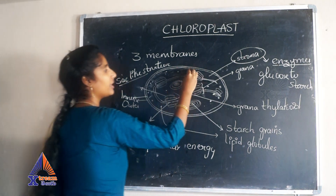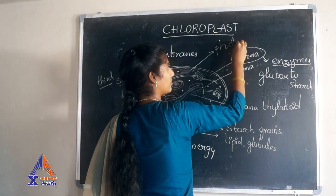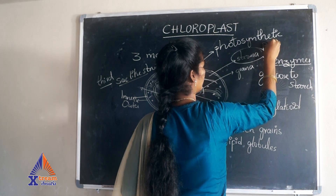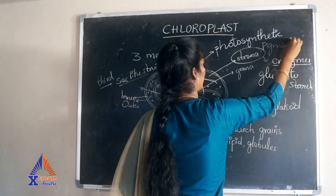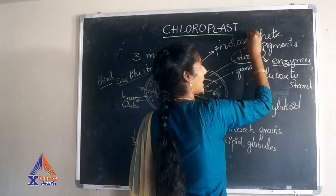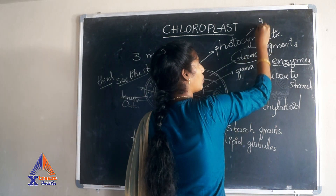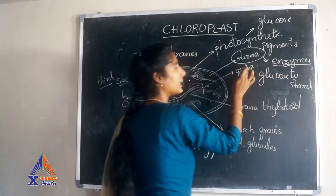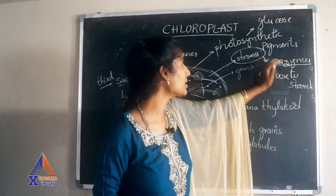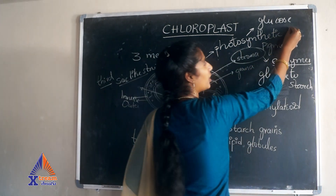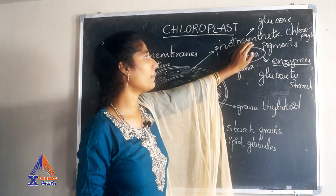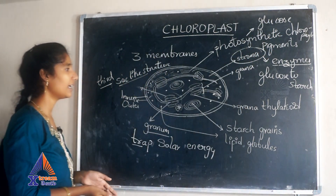In chloroplast, we have photosynthetic pigments. These photosynthetic pigments are used to produce glucose. In stroma, the enzymatic activity will convert the glucose to starch. Chlorophyll is one example of a photosynthetic pigment, and it is helpful for the synthesis of glucose in the photosynthesis reaction.